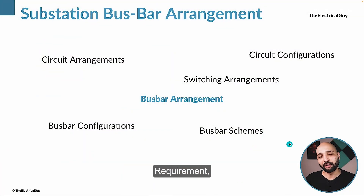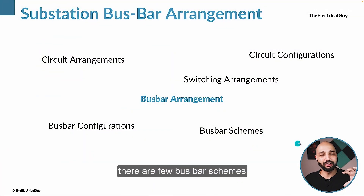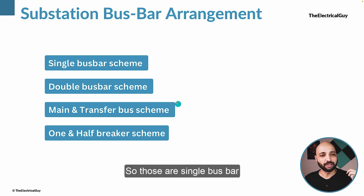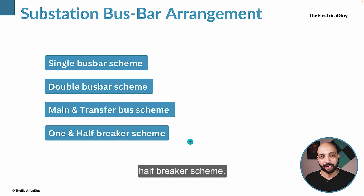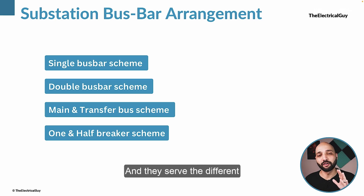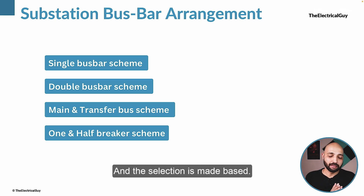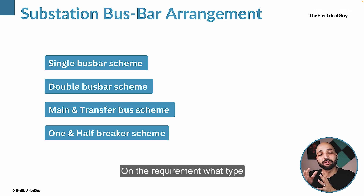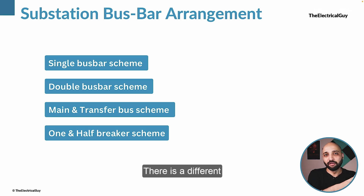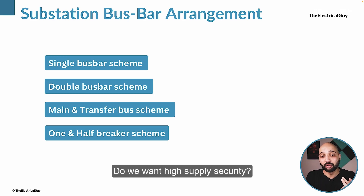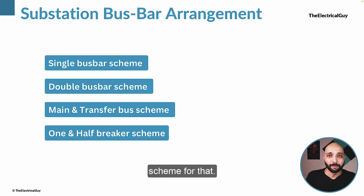Based on different requirements, a few busbar schemes are defined: single busbar scheme, double busbar scheme, main and transfer bus scheme, and one-and-a-half breaker scheme. Each of these arrangements is unique and serves a different purpose, and the selection is made based on the requirement. What type of substation is it? Do we want operational flexibility? There is a different scheme for that. Do we want high supply security? There is a different scheme for that.